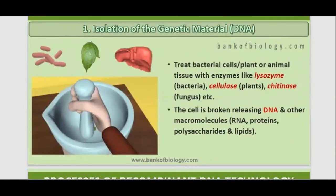First of all, we are isolating the genetic material — our DNA. In the first step, we treat bacterial cells, plant and animal tissue with enzymes like lysozyme, cellulase, and chitinase. We use lysozyme to digest the bacterial cell wall, cellulase to digest the cellulose cell wall of plants, and chitinase to digest the fungal cell wall.